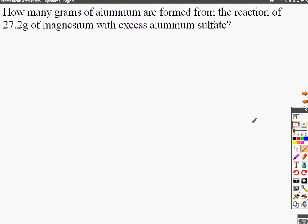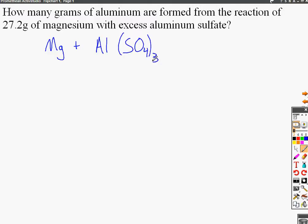The first step in any problem like this is to write out and balance the equation. We start with magnesium plus aluminum sulfate. Aluminum sulfate is a combination of aluminum and the sulfate ion. Sulfate is negative 2 and aluminum is positive 3, so the correct formula is Al₂(SO₄)₃.